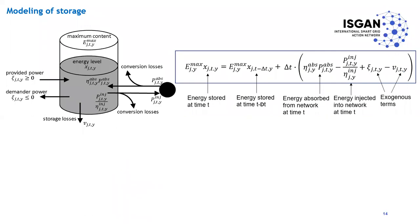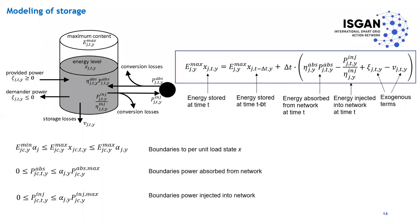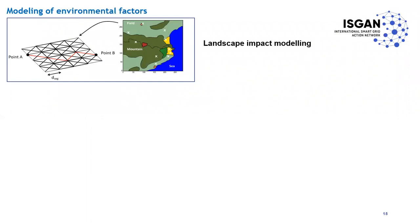For storage, the typical state equation is used: storage at time t equals storage at time t minus Δt, plus absorbed minus injected power, plus two exogenous terms. For batteries those exogenous terms are negligible, but for a hydro pumped storage plant, exogenous terms represent water inflow from a river into the upper reservoir. There are also boundary equations for the state of charge and for the absorbing and injecting power limits.